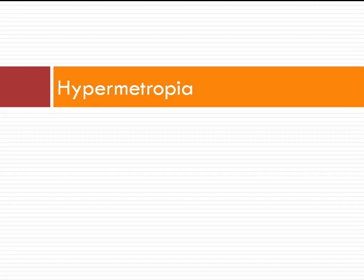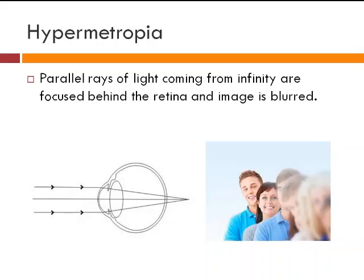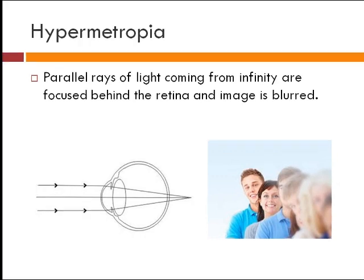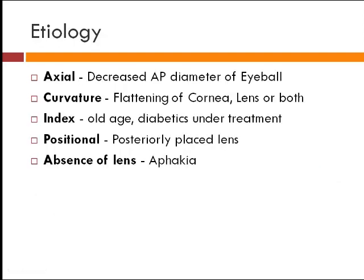Now comes hypermetropia. It is a refractive error in which the parallel rays of light coming from infinity are focused behind the retina and the image is blurred, as you can see in this picture. Remembering those three factors we discussed: if the axial length is decreased, that will be classified as axial hypermetropia. If the surface of the cornea is flat, that will be labeled as curvature hypermetropia.